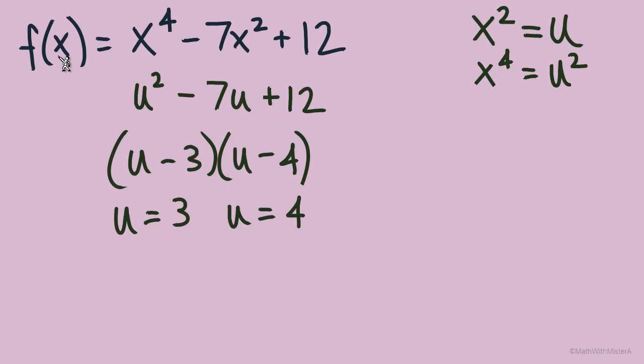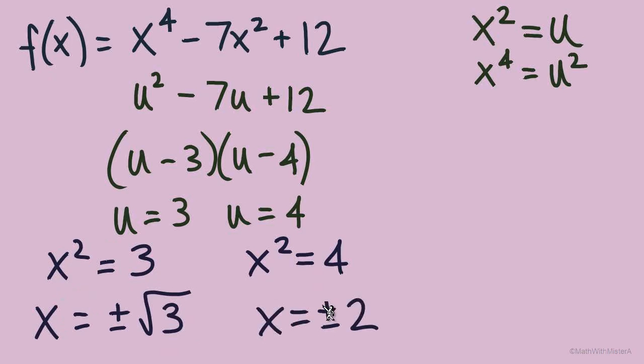But remember, our original function was a function of x, so the zeros of this function also need to be x values and not u values. We need to substitute our x's back in. Our rule was that x^2 = u, so these two equations become x^2 = 3 and x^2 = 4. We're not done yet because our zeros need to be x, not x^2. We square root both sides. From x^2 = 3, we get x = ±√3, and from x^2 = 4, we get x = ±2. We used factoring on this degree 4 polynomial because the exponents fit the quadratic pattern.